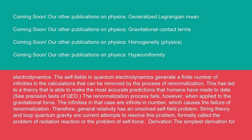The renormalization process fails, however, when applied to the gravitational force. The infinities in that case are infinite in number, which causes the failure of renormalization. Therefore, general relativity gravity has an unsolved self-field problem. String theory and loop quantum gravity are current attempts to resolve this problem, formally called the problem of radiation reaction or the problem of self-force.